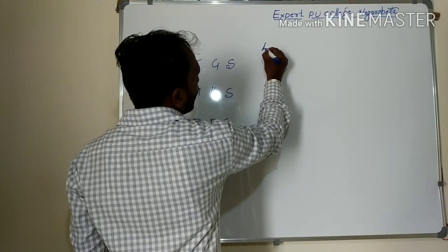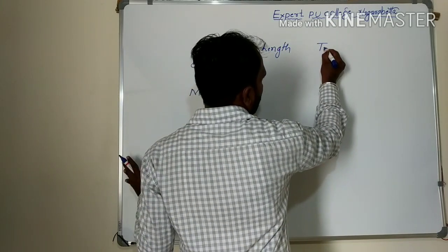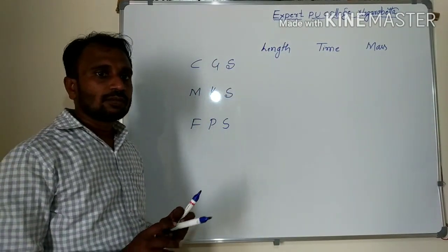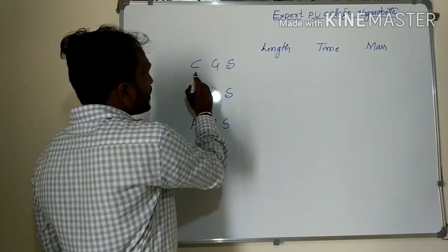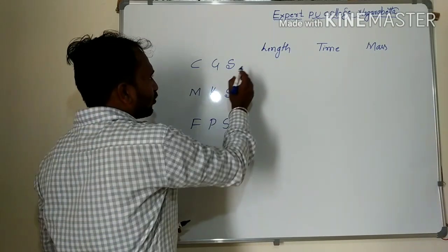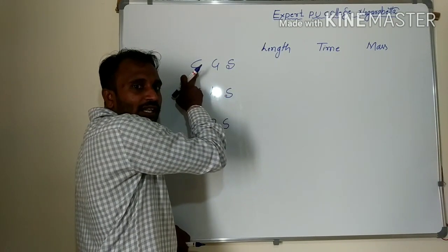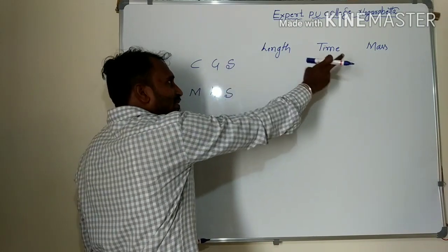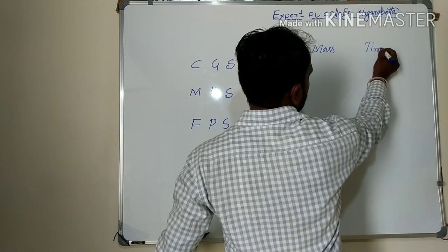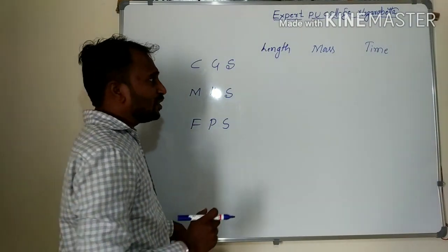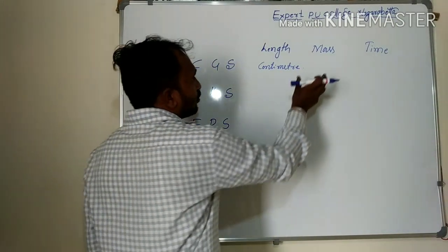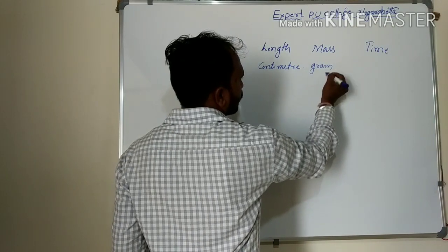In the three main physical quantities — length, time, and mass — in the CGS system, length is measured in centimeter, because C represents centimeter (length), G represents gram (mass), and S represents second (time). So in the CGS system, length is measured in centimeter, mass is measured in gram, and time is measured in second.